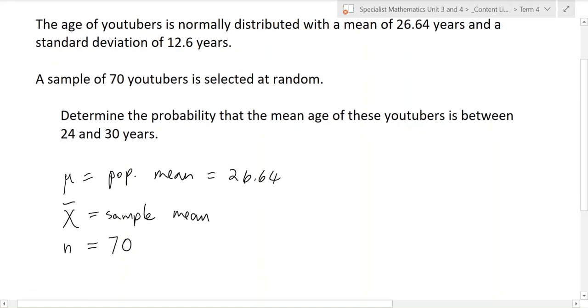We then have standard deviation, which is omega. This is the population standard deviation. Standard deviation is a measure of spread.